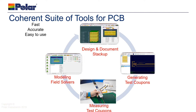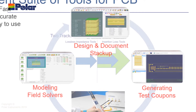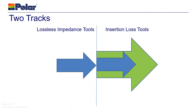They allow you to close the loop between design, measurement and modelling. We've got two tracks of tools: one typically for products that are designed up to one or two gigahertz — the lossless impedance tools — and then for people working on higher speed designs, the insertion loss tools, which have all of the features of the lossless tools plus the ability to model insertion loss.